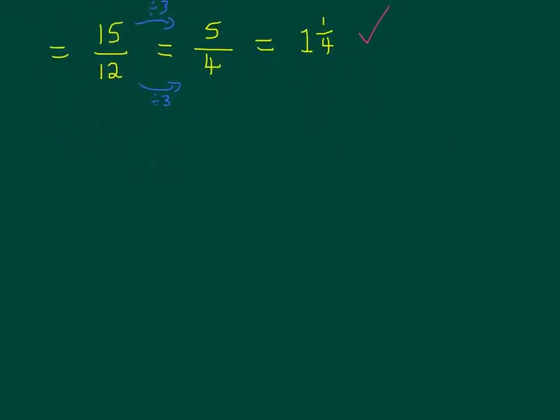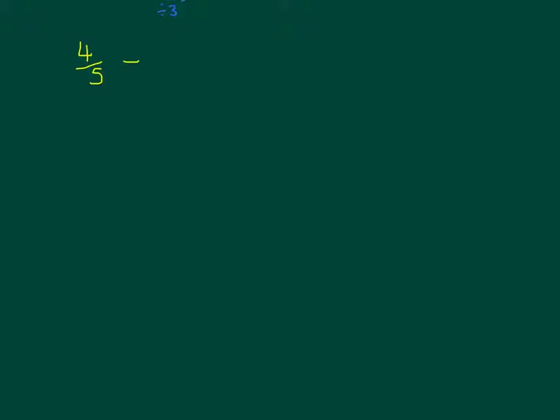Let's do another example — this time subtracting. We can do 4 over 5 minus 3 quarters. Again I need a common denominator because the denominators — the 5 and the 4 — are not the same. I'm looking for a number in the 5 times table and the 4 times table. Well done if you've come up with 20, because 20 is in both the 5 times table and the 4 times table. Other numbers would work too like 40 or 60, but 20 is the simplest. So I'm going to change my denominators both to 20.